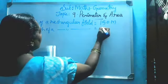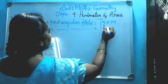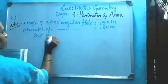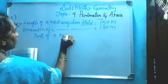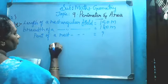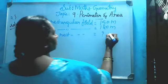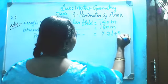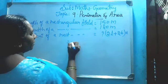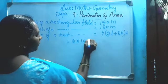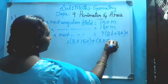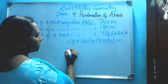Breadth of a rectangular field is 120 meters. Perimeter of a rectangular field we don't know, so apply the formula: 2 into length plus 2 into breadth, unit. So apply 2 into 150 plus 2 into 120 meters.